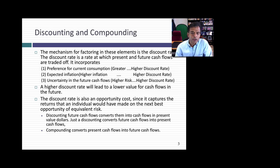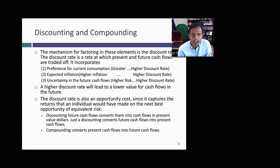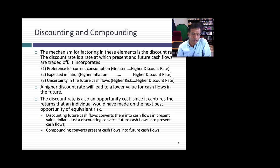Let's bring this together into a very simple process. The mechanics of time value of money are built around discounting or compounding. Discounting reflects bringing future cash flows back to today; compounding reflects taking today's cash flows into the future. The discount rate is the mechanism used to incorporate all three factors: holding all else constant, the greater the preference for current consumption, inflation rate, or uncertainty, the higher the discount rate.